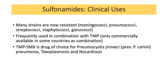Ever since the inception of this drug, bacterial resistance has continued to increase together with trimethoprim, limiting their use in the clinical setting. Many strains are now resistant, including meningococci, pneumococci, streptococci, staphylococci, and gonococci. In the clinics, sulfonamides are frequently used in combination with trimethoprim and are only commercially available in some countries as a combination. Trimethoprim-sulfamethoxazole is the drug of choice for Pneumocystis jirovecii — previously called Pneumocystis carinii — the most common cause of pneumonia in AIDS patients, toxoplasmosis, and nocardiosis.